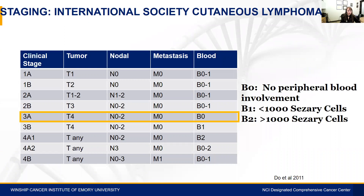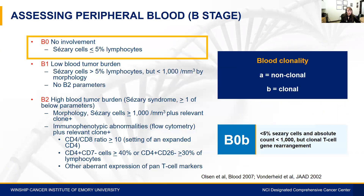Where did our patient fall? He had involvement of greater than 80% of the skin, placing him at tumor stage T4. He had no abnormal lymph nodes and no visceral involvement on imaging. Technically, his blood staging was B0. Even though he had 1% involvement, blood staging in CTCL requires Sézary cells to be greater than 5% of lymphocytes for B0. Patients above 5% but with an absolute count less than 1,000 are B1, while B2 — Sézary syndrome — requires more than 1,000 cells. His blood stage was therefore B0B, indicating clonality.